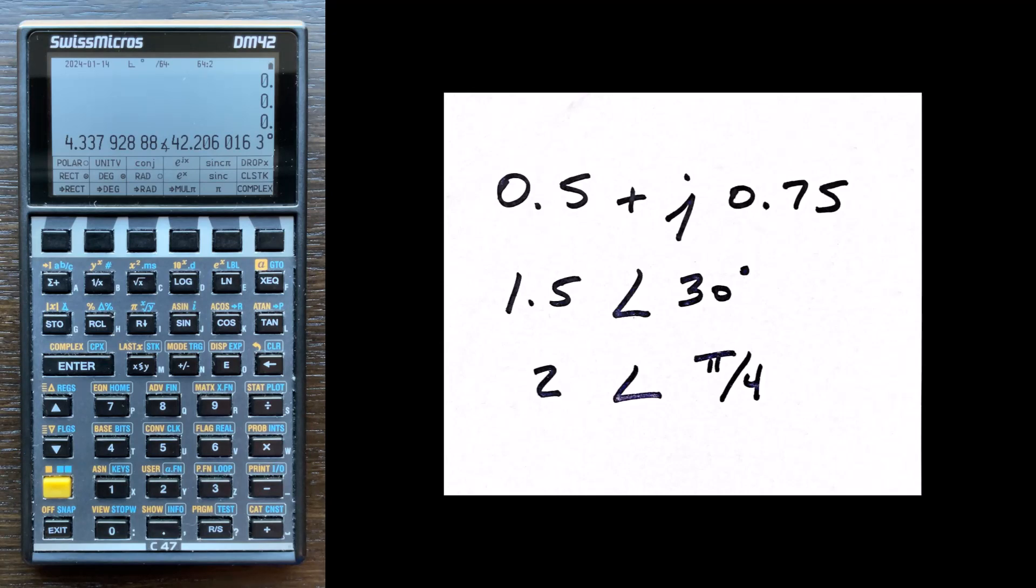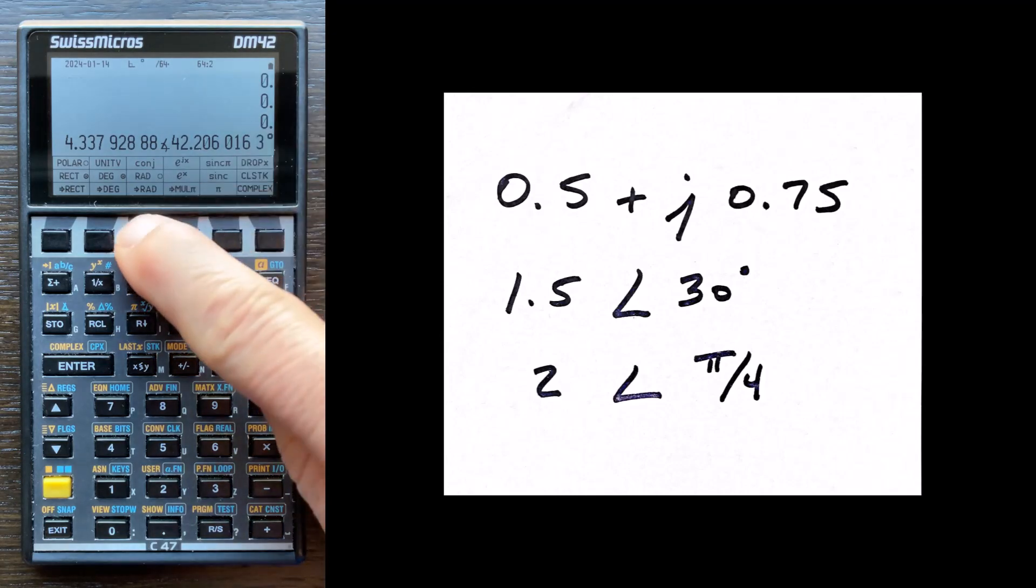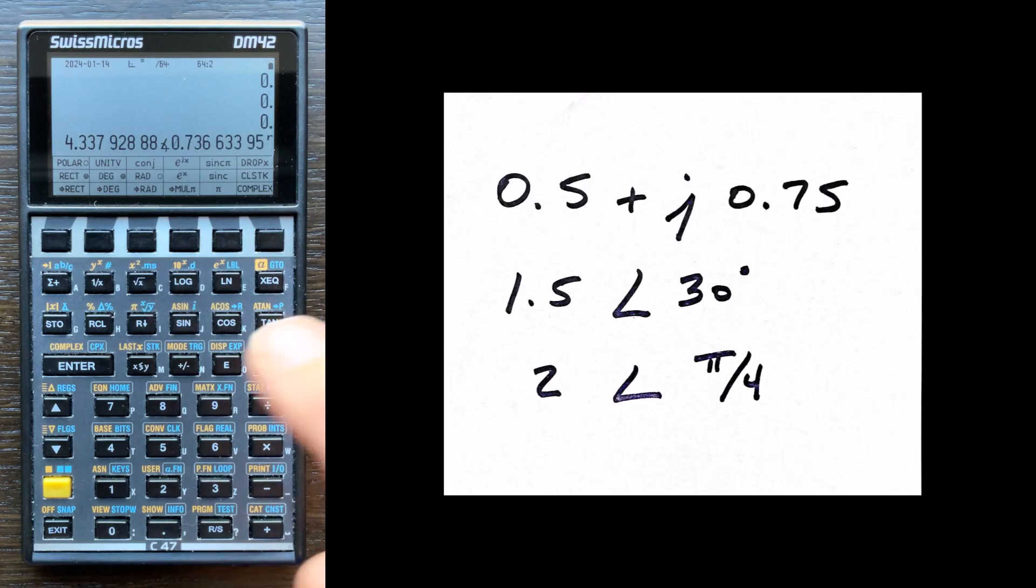If I want real and imaginary or rectangular format, it shows real plus j imaginary. So it's very easy to convert this to whatever format I want. The calculator's mode is not changing at all - it stays in rectangular mode and degrees because I'm explicitly telling it what to do for each step. I don't need to change the calculator mode.